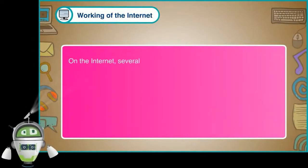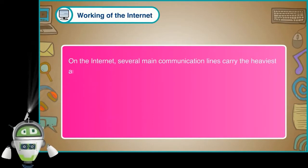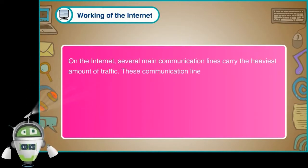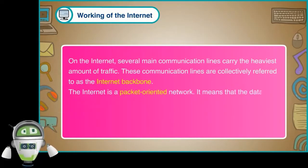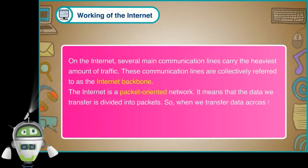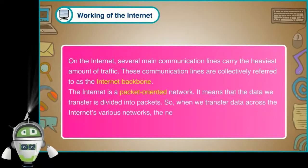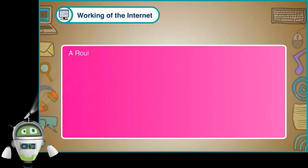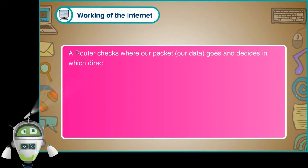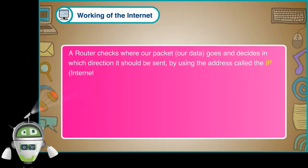On the internet, several main communication lines carry the heaviest amount of traffic. These communication lines are collectively referred to as the internet backbone. The internet is a packet-oriented network, which means that the data we transfer is divided into packets. When we transfer data across the internet's various networks, the networks are linked by special computers called routers. A router checks where our packet — which is our data — goes and decides in which direction it should be sent, using the address called the IP, or the Internet Protocol.